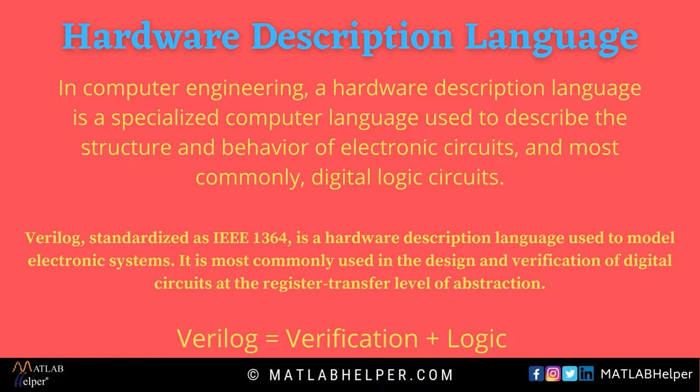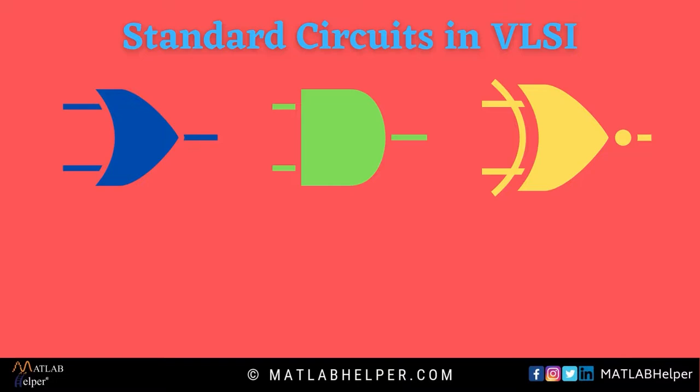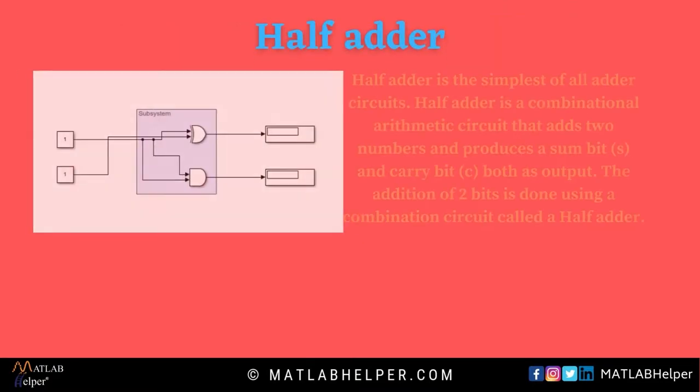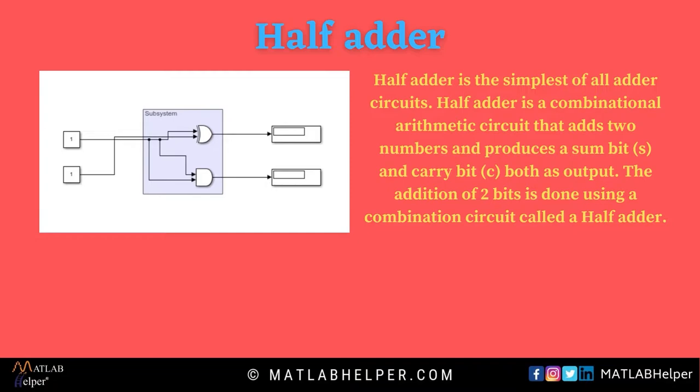Now let us learn about some standard circuits used in VLSI. Most of the circuits are built using logic gates. Logic gates take binary input and return the output as a binary number. The half adder is the most basic circuit used for the addition of two numbers. It accepts two inputs of binary digits and returns two outputs — one for the sum and one for the carry. It uses XOR and AND gates for this operation.